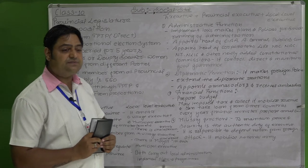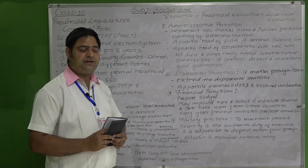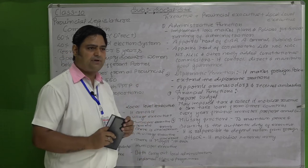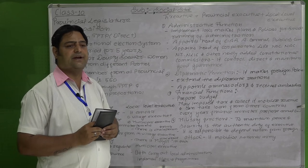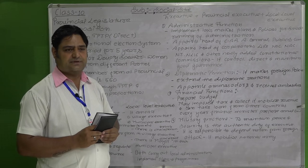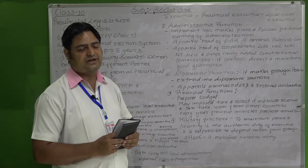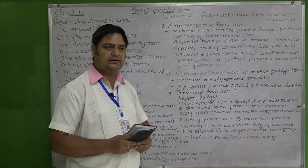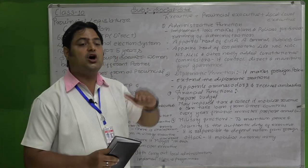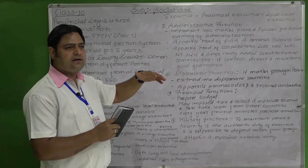The executive is headed by the prime minister, who is selected from the parliament — the legislature — by the member who commands a majority. The prime minister is appointed by the president. Under the prime minister's chairmanship, other ministers are also appointed; the prime minister recommends to the president, and the cabinet has not more than 25 members. The executive has three tiers: federal, provincial, and local level.